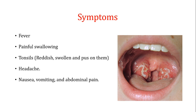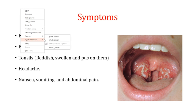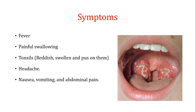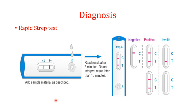The most common symptoms of Streptococcus pyogenes infection are fever — more than 38 degrees centigrade or 100.4 degrees Fahrenheit — and painful swelling due to inflammation. The tonsils may be reddish, swollen, or there may be pus on them. As you can see in this image, there is pus on the tonsils of an individual with Group A Streptococcus pharyngitis. There may also be headache, nausea, vomiting, or abdominal pain.